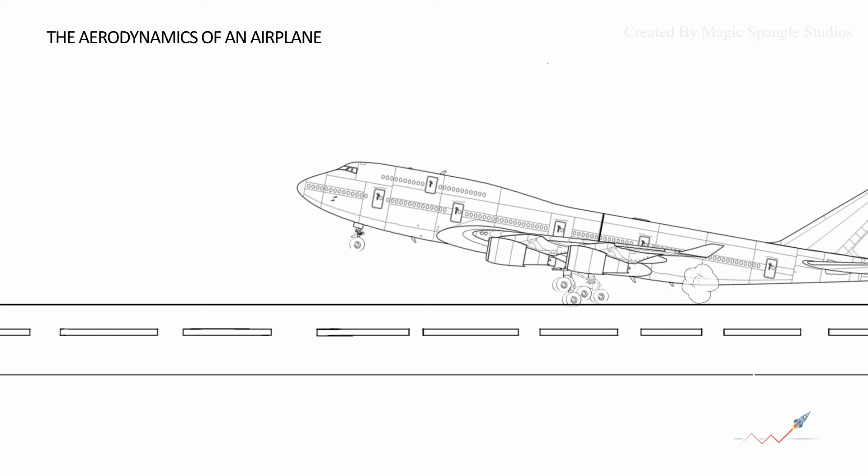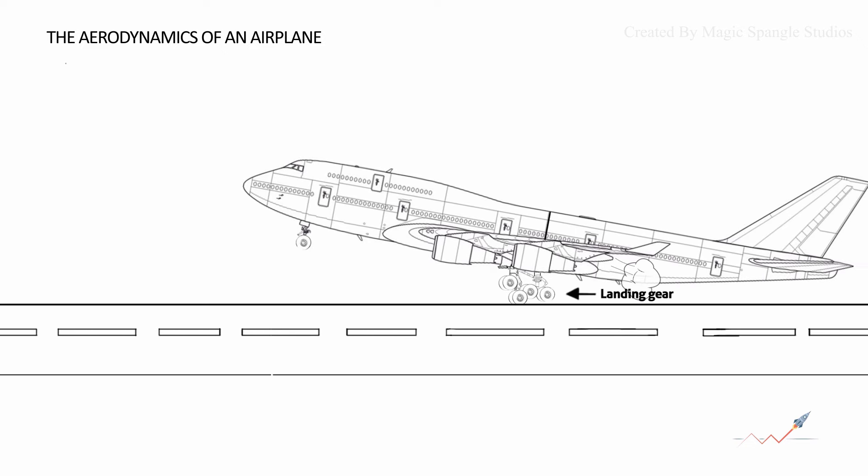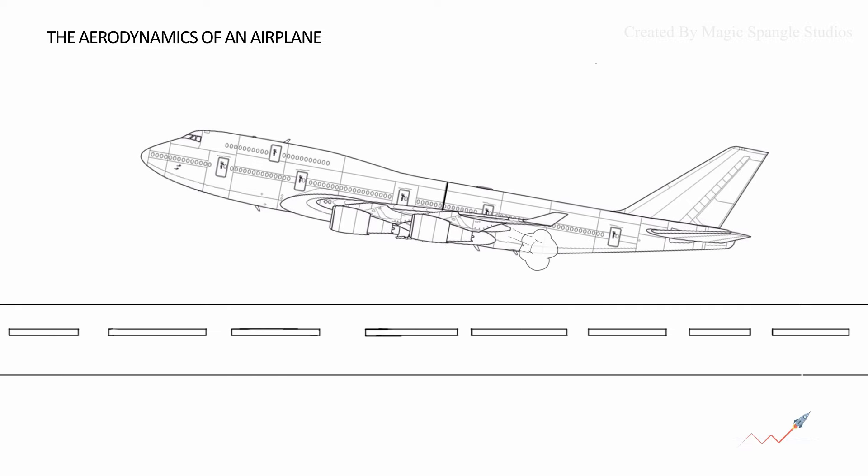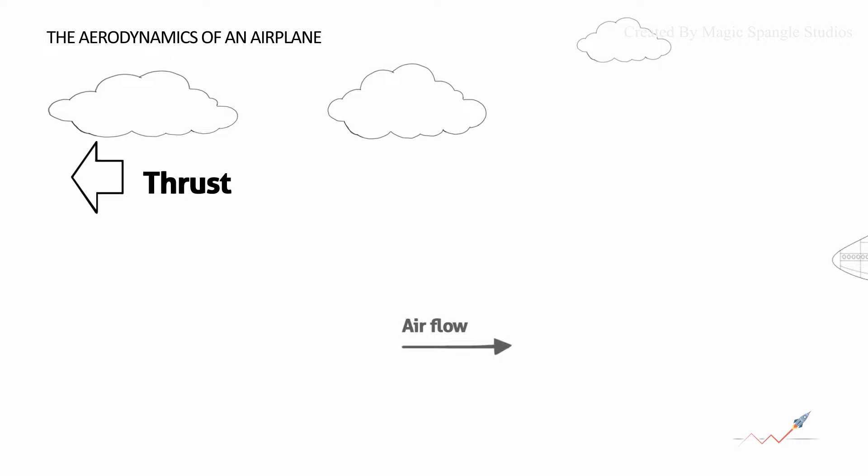The airplane always retracts its landing gear and nose gear into the body of the plane after takeoff to reduce drag.